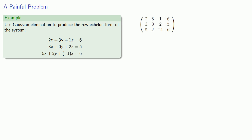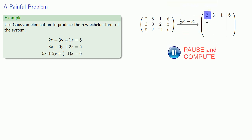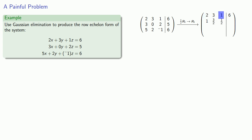Our first row pivot is 2, so we need to multiply that first row by 1/2 to make that pivot equal to 1. We'll multiply each term in that first row by 1/2: 2 × 1/2 = 1, 3 × 1/2 = 3/2, 1 × 1/2 = 1/2, and 6 × 1/2 = 3. We no longer need the original first row, and the other two rows remain unchanged.